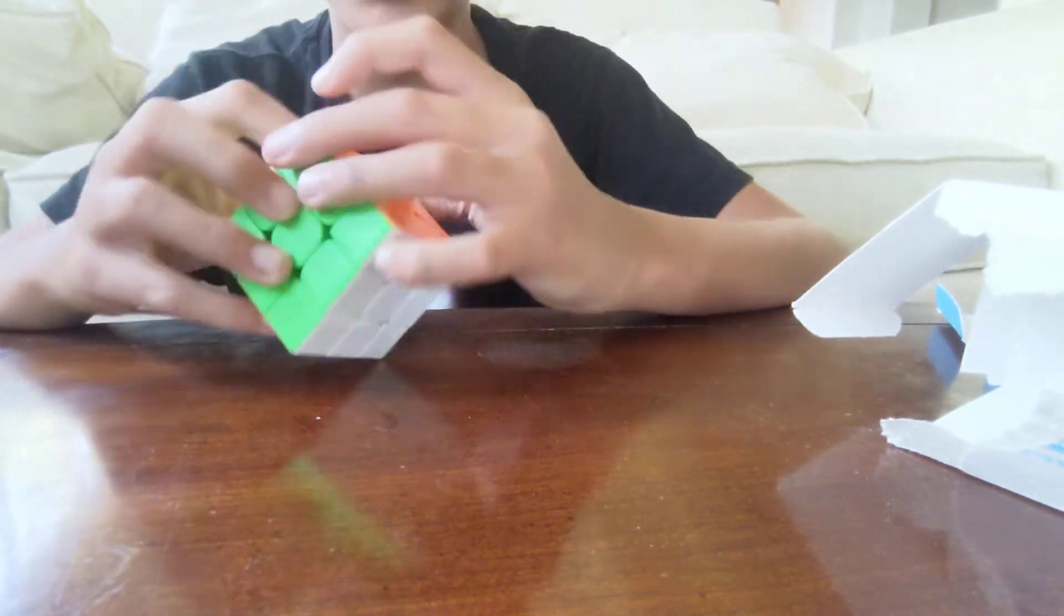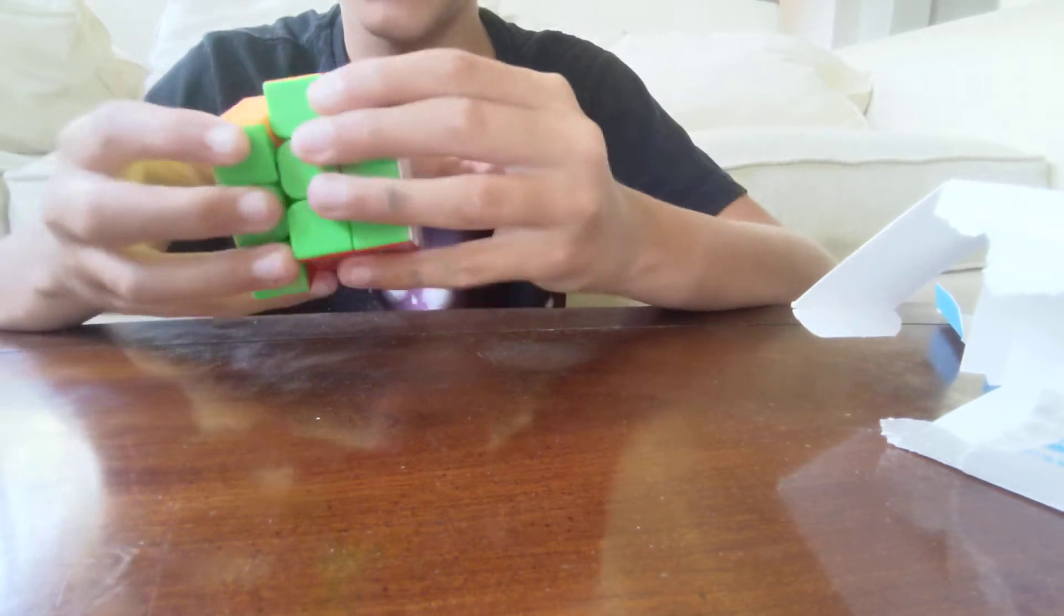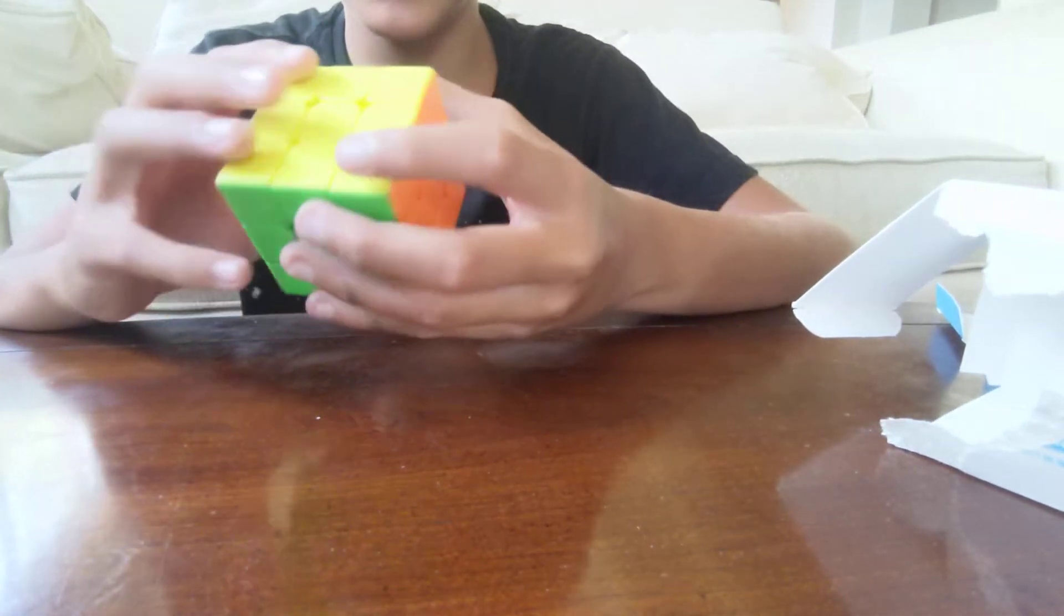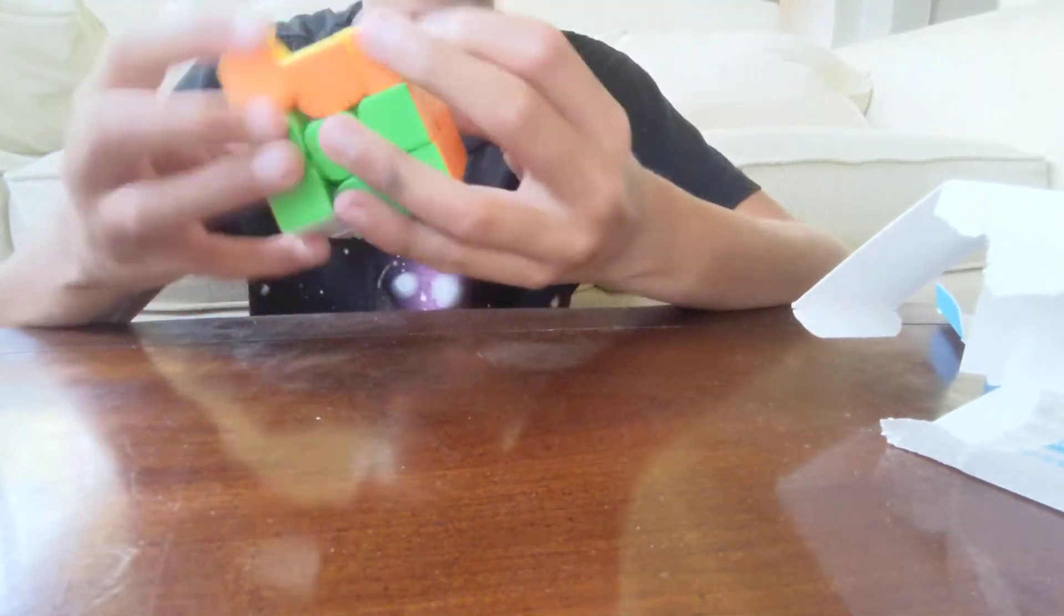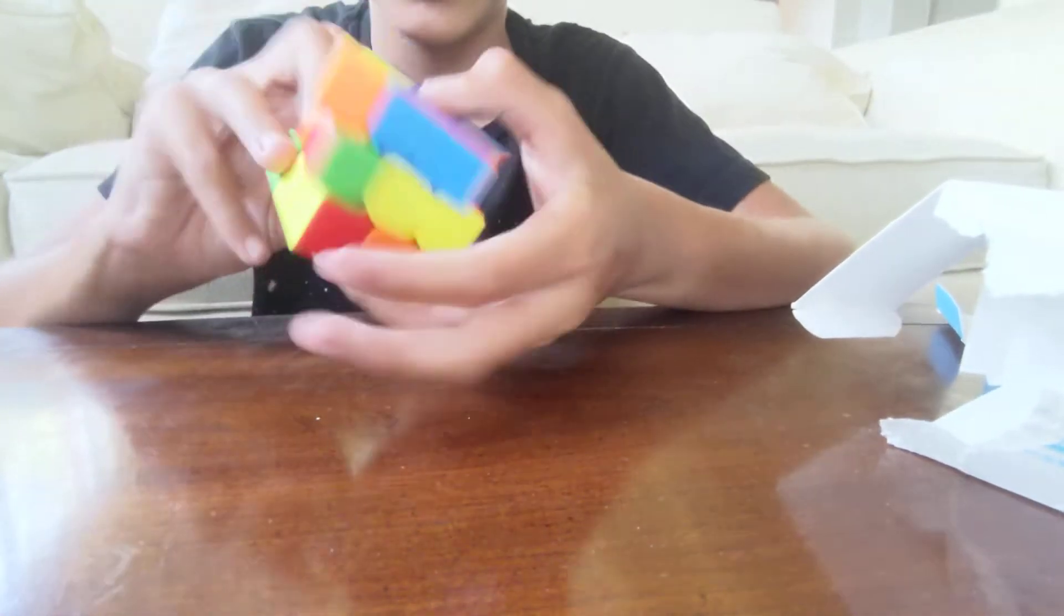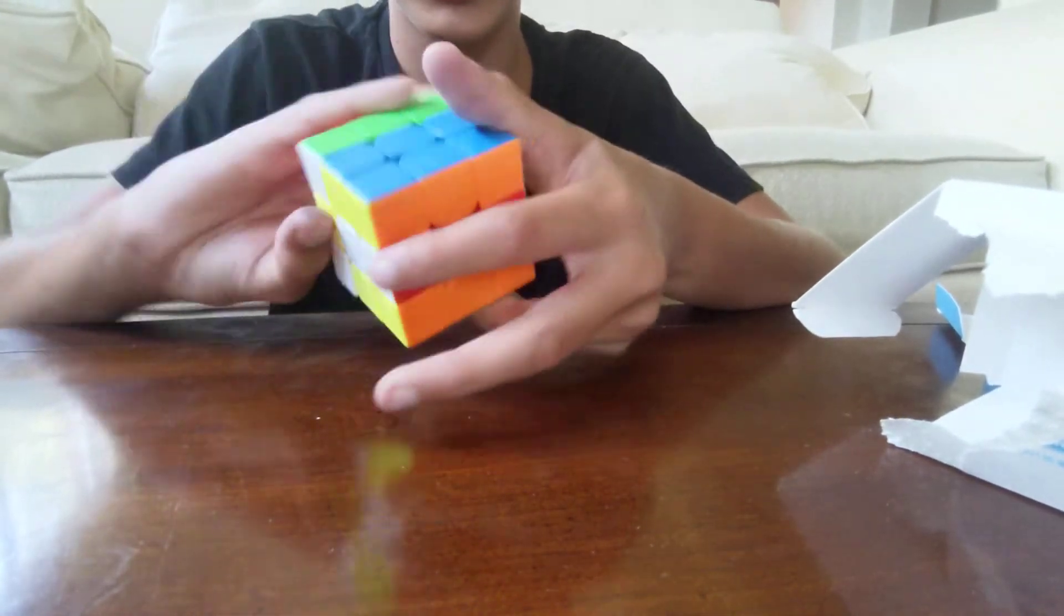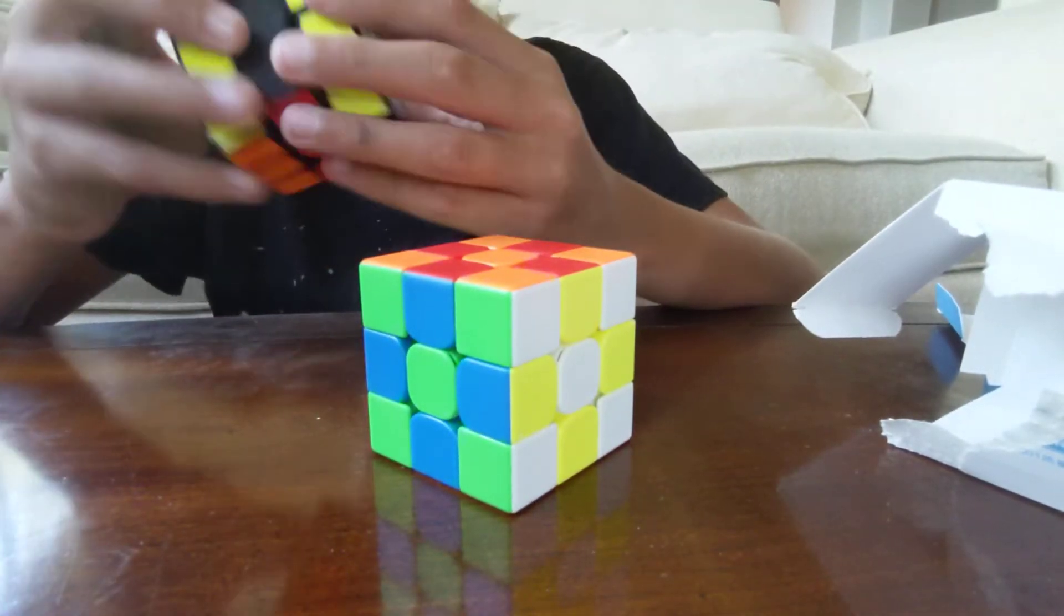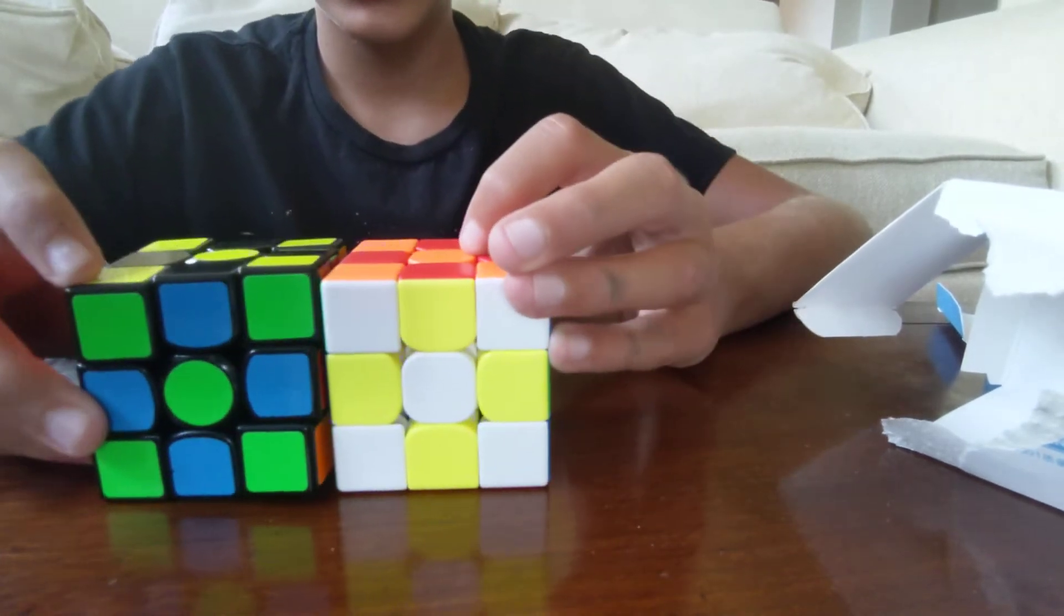So I might need to figure out how to loosen this up a tiny bit because I just don't really like the settings right now. But honestly this is like the best cube I've ever owned. So here's a side-by-side checkerboard.